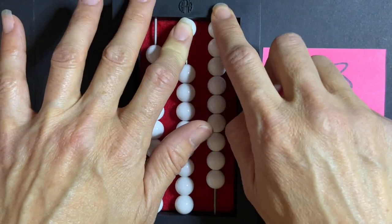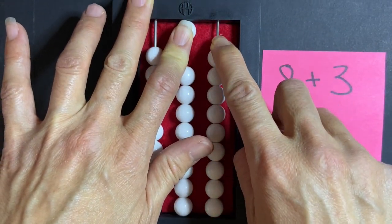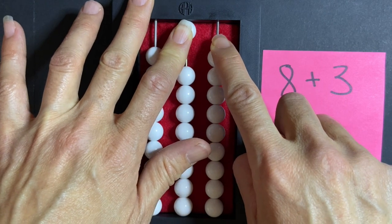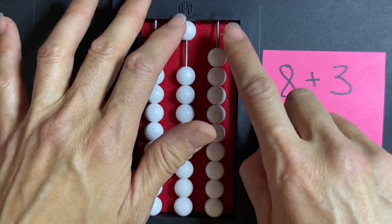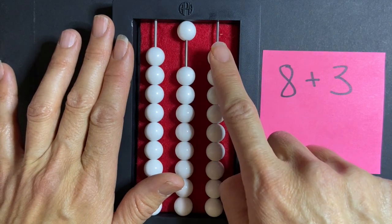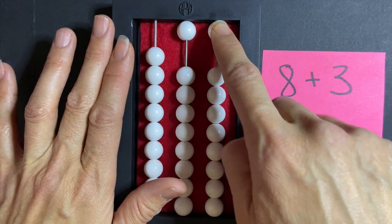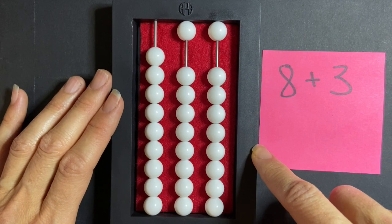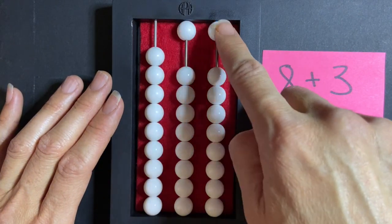At the same time I'm going to clear all 9 beads in my ones column but I'm not going to count while I clear them. And then as I push one more bead up towards the counting bar in my ones column I'm going to count 3. And I get my answer which is 11.